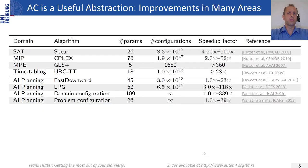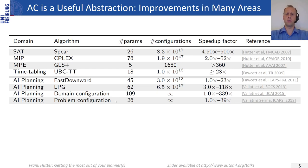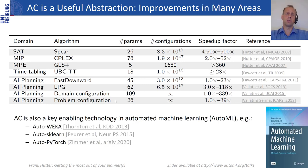Algorithm configuration is a useful abstraction that has improved algorithms across many areas of AI: satisfiability solving, mixed integer programming, the most probable explanation problem, timetabling, and of course AI planning — with four applications I'll detail: configuring Fast Downward, LPG, the domain model, and the problem model. Algorithm configuration is also a key enabling technology in automated machine learning (AutoML), enabling tools such as Auto-WEKA, Auto-Sklearn, and Auto-PyTorch.